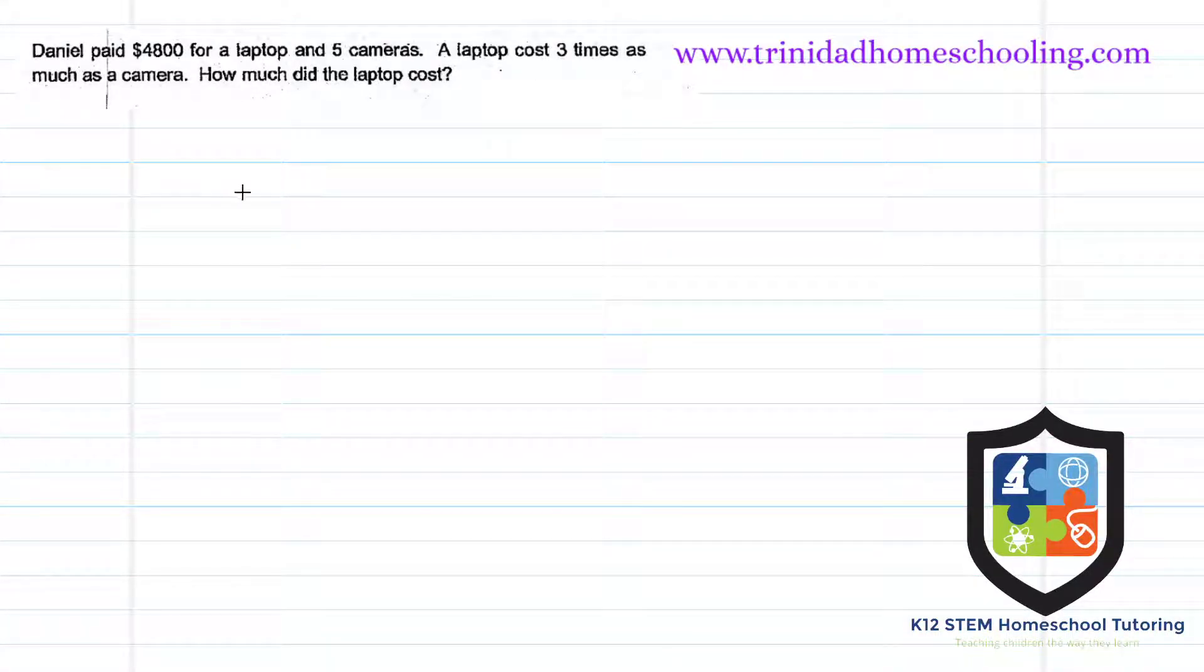So Daniel paid $4800 for a laptop and five cameras. A laptop cost three times as much as a camera. How much did the laptop cost? So here we have some whole amount which is the $4800.